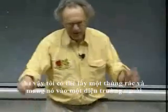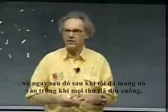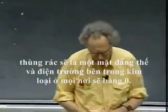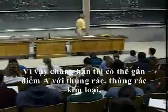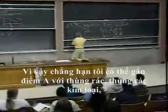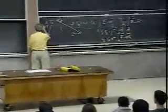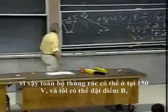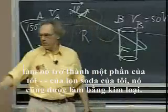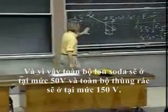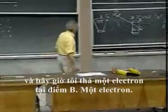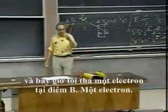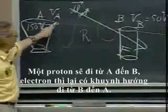I can take a trash can and bring it into an external field. Very shortly after, when things have calmed down, the trash can will be an equipotential and the electric field inside the metal will everywhere be zero. So I could attach point A to a metal trash can — the whole trash can would be at 150 volts — and make point B part of a soda can, also made of metal, so the whole soda would be at 50 volts. Place the whole thing in vacuum, release an electron at point B — an electron wants to go to higher potential, so it goes from B to A.